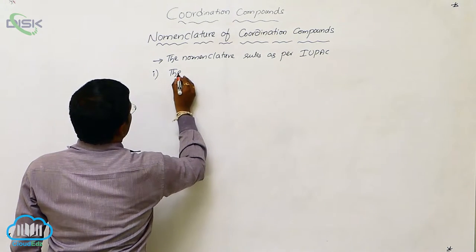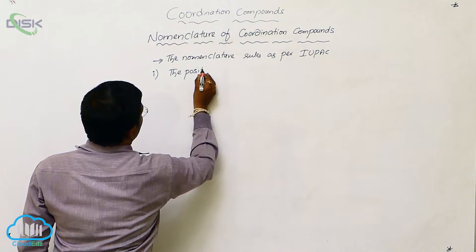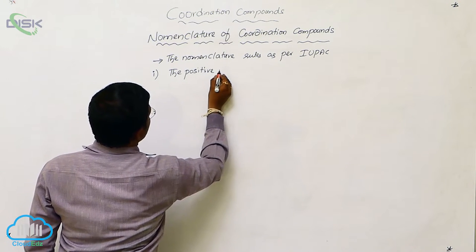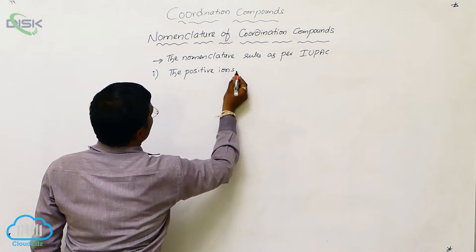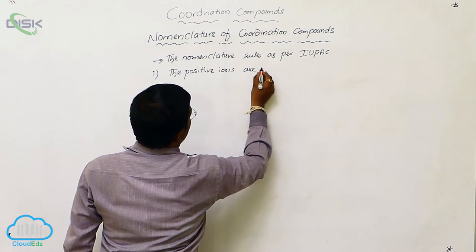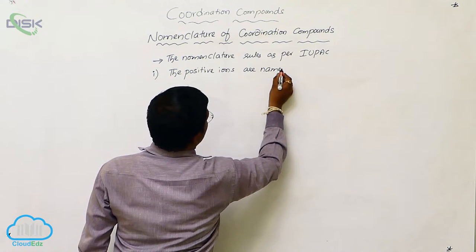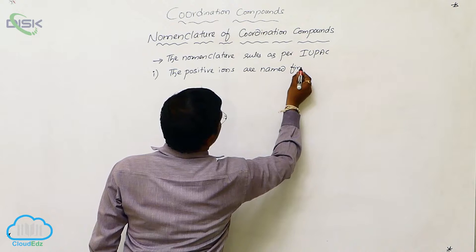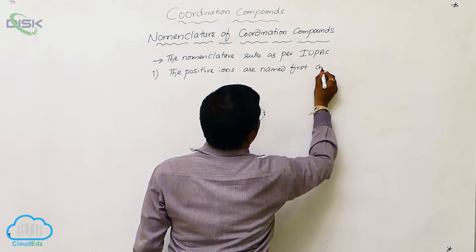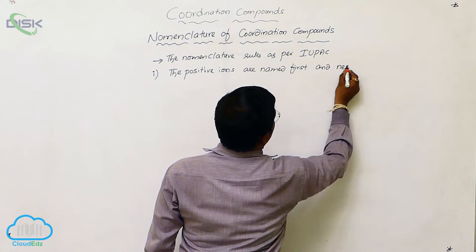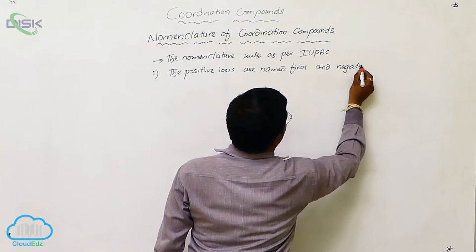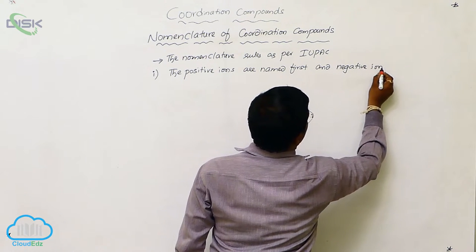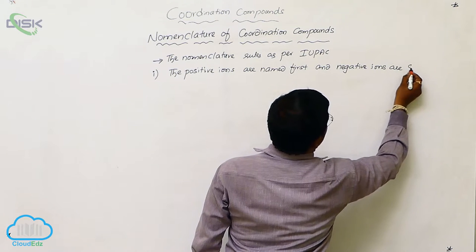The first rule: positive species or positive ions are named first, and negative ions are second.